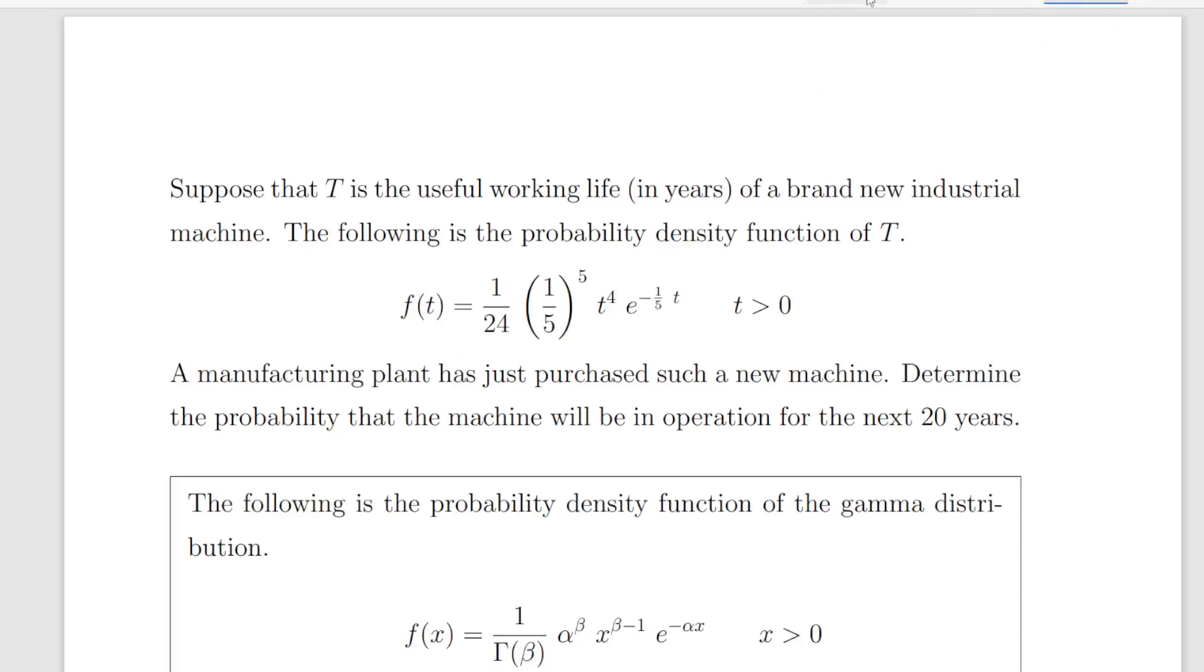In this presentation we are going to look at the gamma distribution. So here we have a worked example. Suppose that T is the useful working lifetime in years of a brand new industrial machine. The following is the probability density function of T: f(t) = 1/24 × (1/5)^5 × t^4 × e^(-t/5), where t > 0.